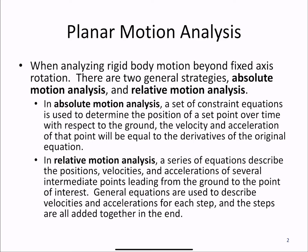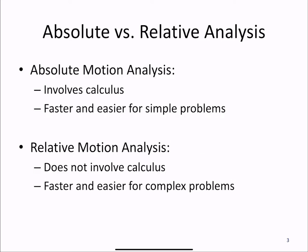We do this step-wise, finding velocity and acceleration at a series of intermediate points, and then combining them to find the value we're ultimately looking for. So absolute motion analysis involves calculus and is sometimes faster and easier for simpler problems with one or two rigid bodies.